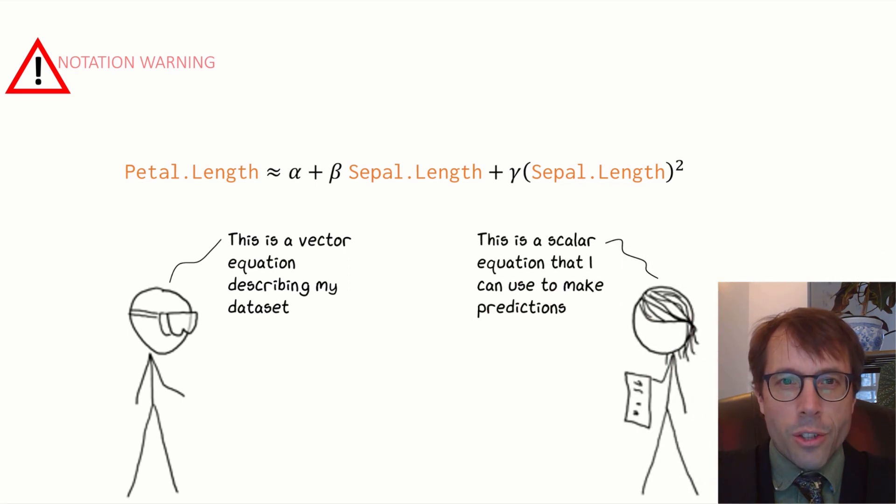This is a scalar equation that I can use to make predictions. What I mean by this is, if I have a completely new iris, and I only know its sepal length, and I want to estimate its petal length. Okay, this is a bit contrived, but this sort of prediction makes much more sense for other data sets.